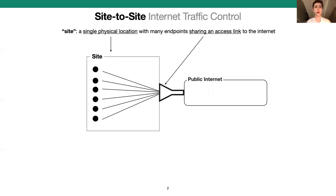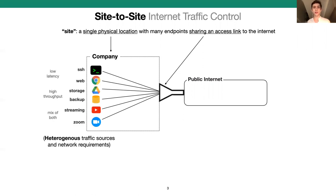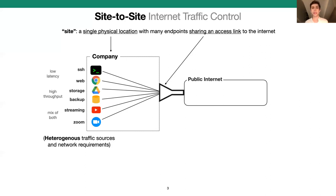Let's start with the company office network as a motivating example. Imagine you are the network administrator for this company and there are a lot of different people and applications using the network, each with different requirements. There's SSH traffic and interactive web browsing that need low latency, cloud storage and backups that need high throughput, and video streaming and Zoom calls which need a mix of both. A common problem is that every time Bob runs a backup session, Alice's SSH traffic starts lagging or her Zoom calls get choppy.